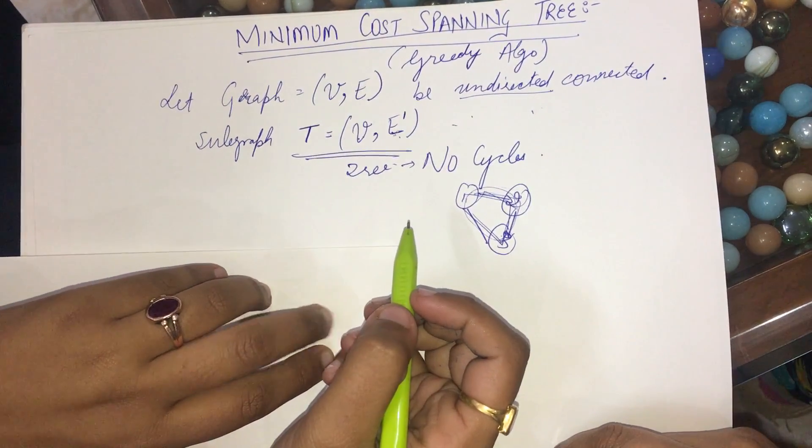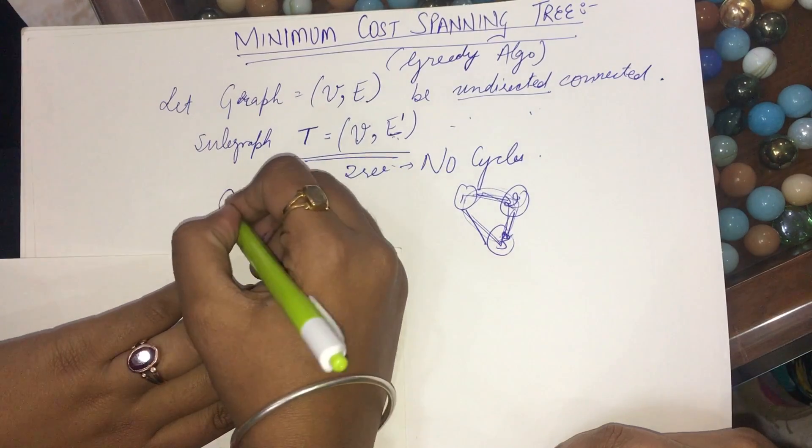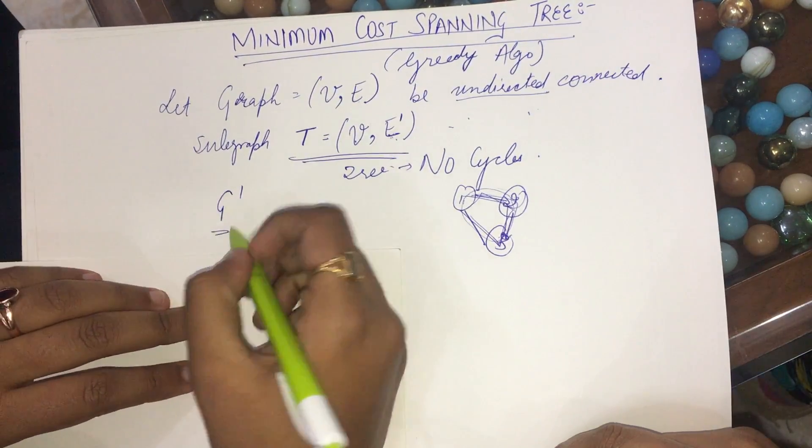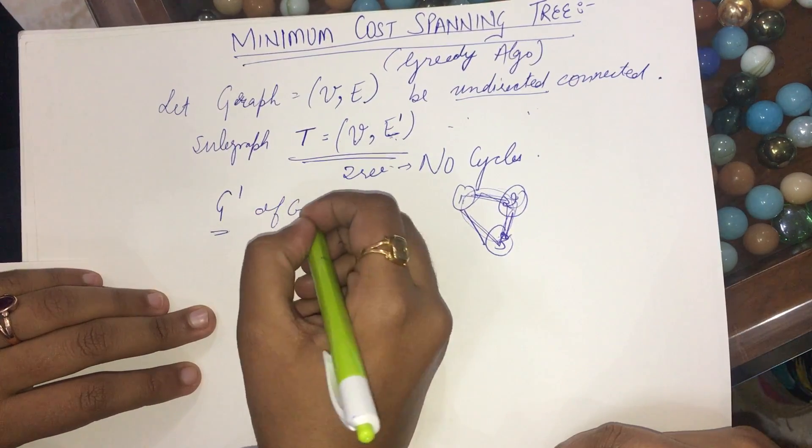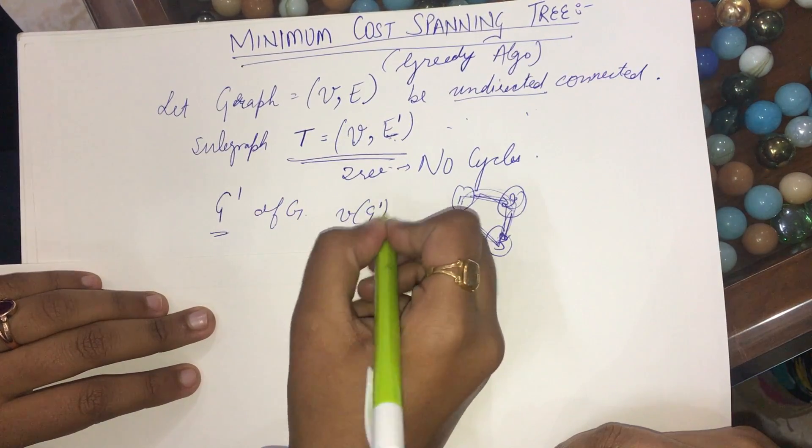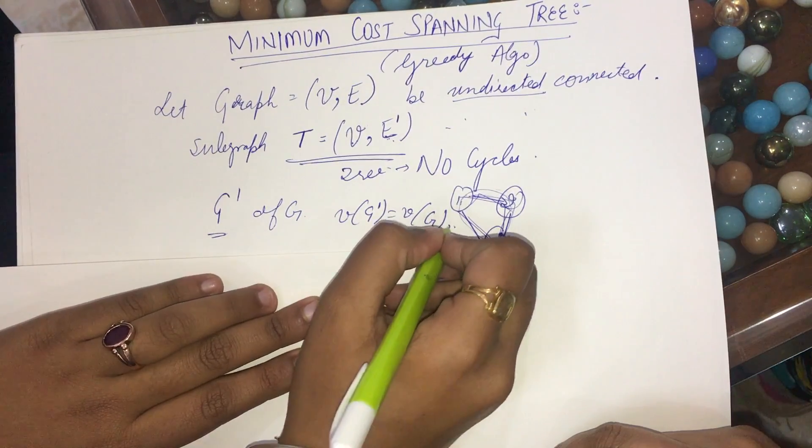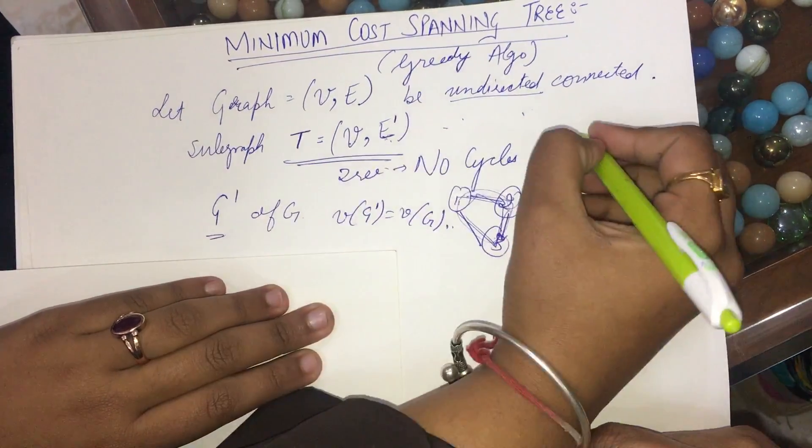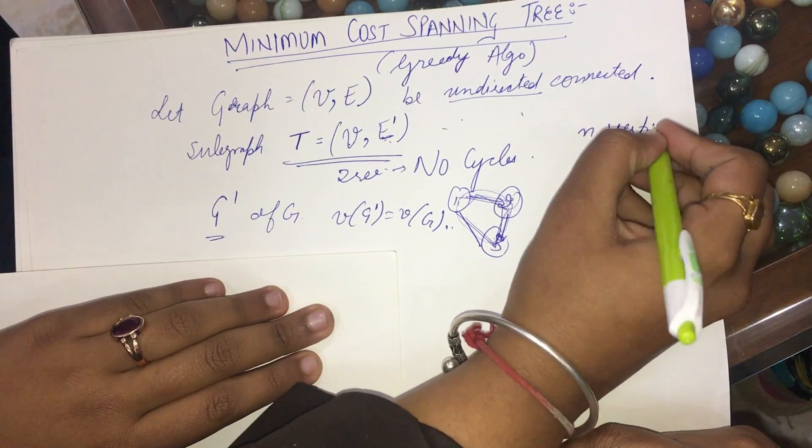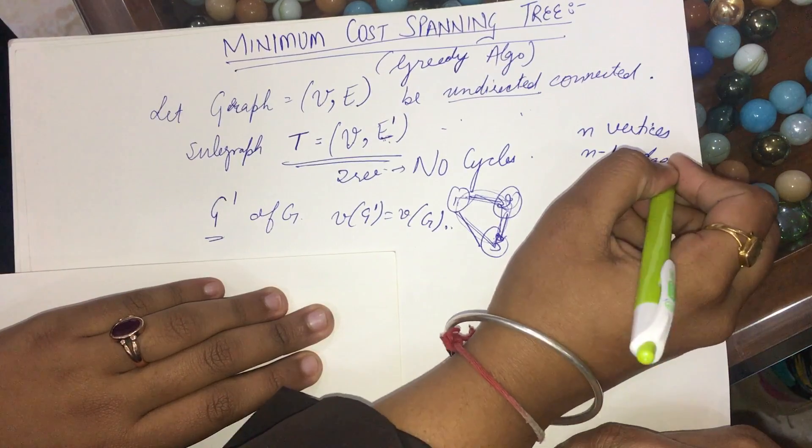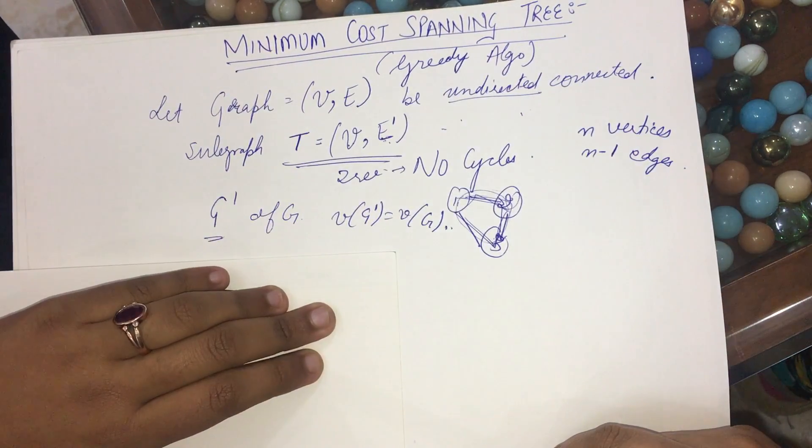And a spanning tree is a minimal subgraph G dash of G, such that the vertices of G dash are equal to the vertices of G. We only change the number of edges as we discussed. That is, if we have N vertices, then we will have N minus 1 number of edges. So let's see this with the help of a problem.